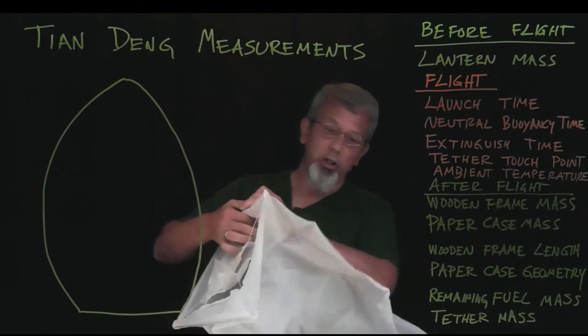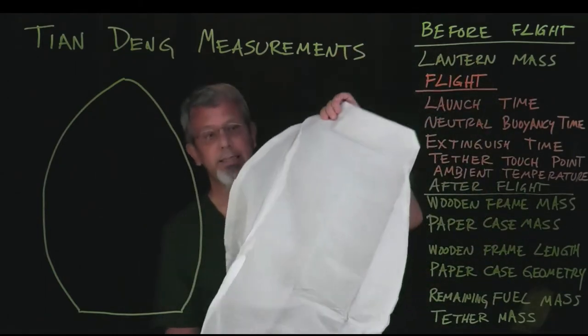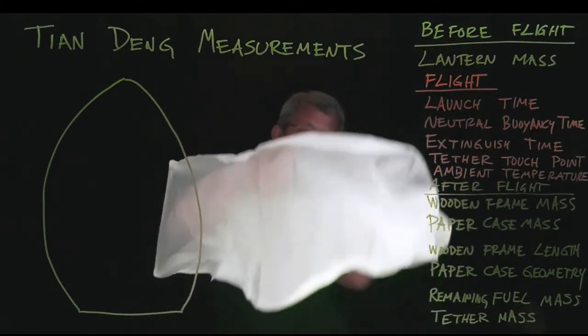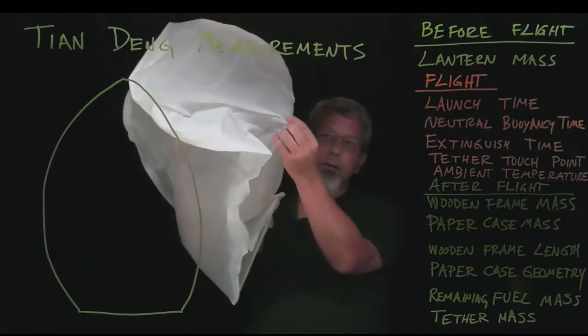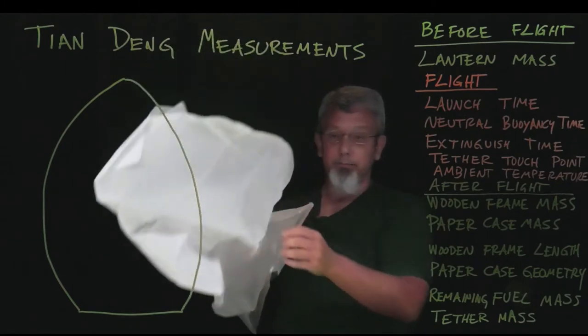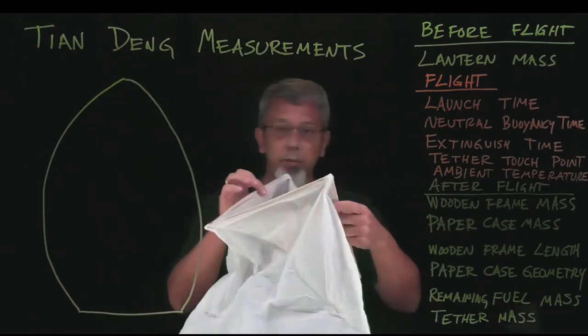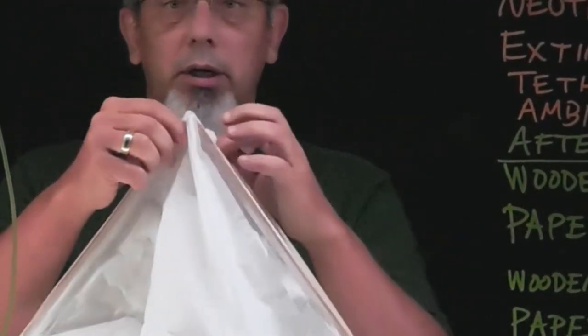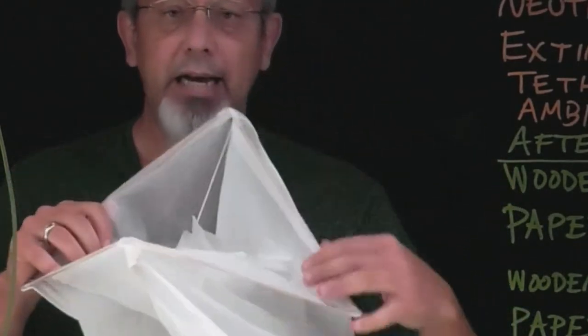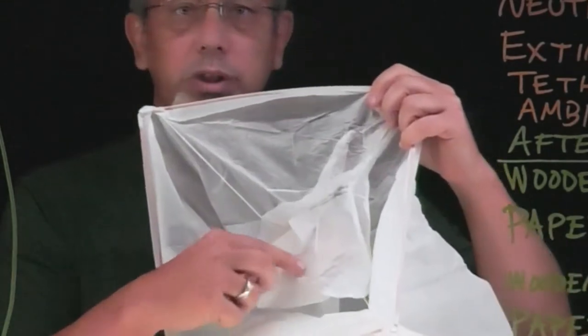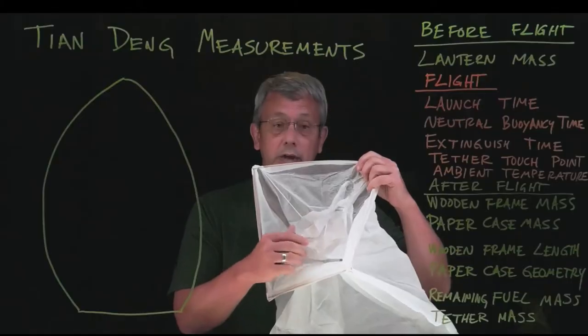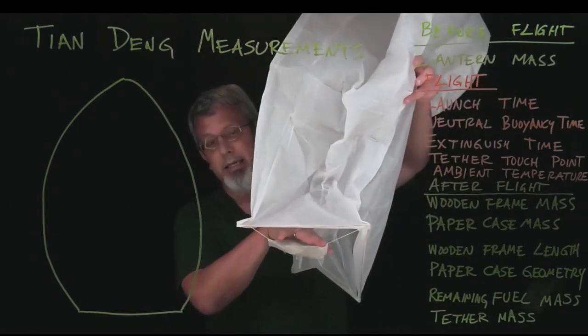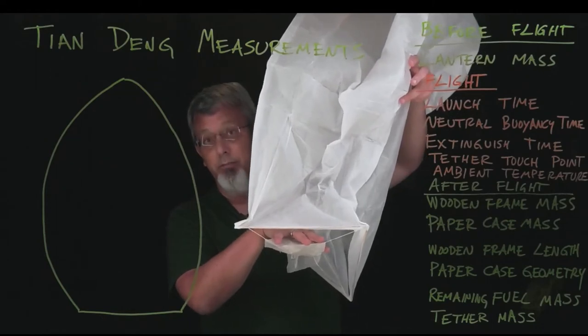First of all, you have the large paper casing here that's going to fill with hot air and expand, and that's what's going to create our buoyancy. The second part here is a frame that's made out of a very light wood, pieced together to make a square down here at the bottom. Then attached there by four small strings is the fuel cell, and this is the part that you're going to light on fire and try to hold the rest of the lantern very carefully away from it as it burns and heats up the inside.